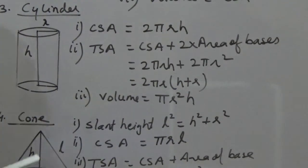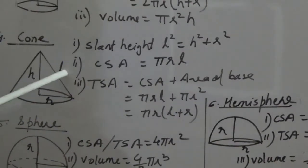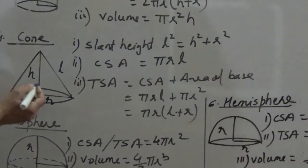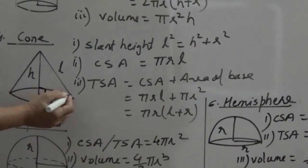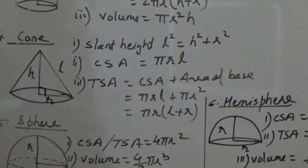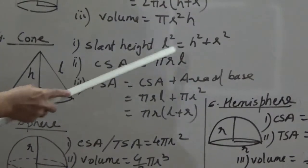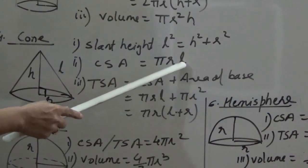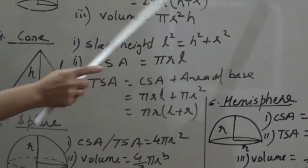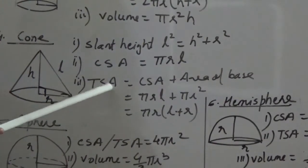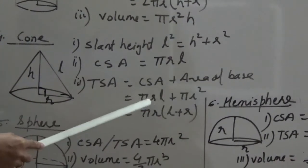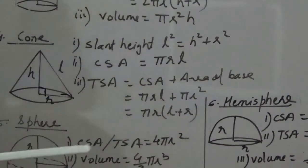Next is the cone. The cone has a height H, radius R, and slant height L. Since it is a right circular cone, they form a right triangle, so by Pythagoras: L² = H² + R². The CSA of a cone is πRL. The total surface area is CSA plus area of the base: πRL + πR². Taking πR common, the total surface area of a cone is πR(L + R).